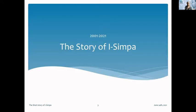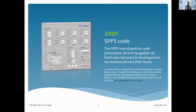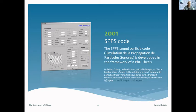Just two words about the story of I-Simpa in order for you to understand why we developed this software. The beginning was in 2001, 20 years ago, where we developed new modeling for sound propagation in streets. The first code we developed was the SPPS code — a kind of ray tracing, but more particle tracing. That means we consider particles emitted by sound sources which travel in the outdoor environment. At that time, we tried to develop an analytical model to predict the noise level in streets, based on a transport equation modeling the sound particle distribution in the 3D domain.